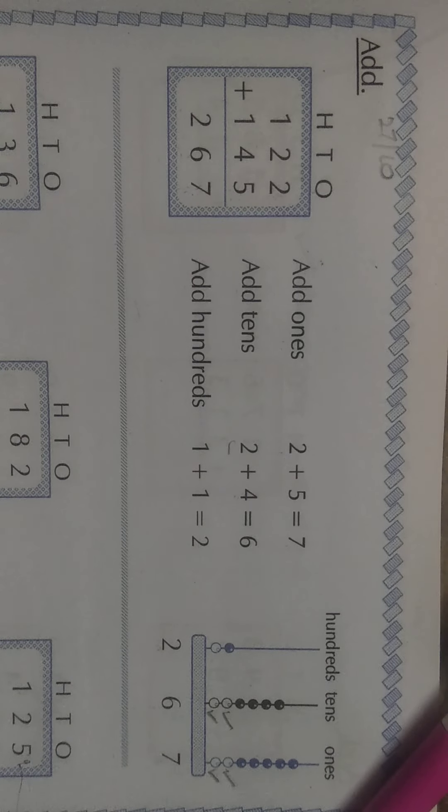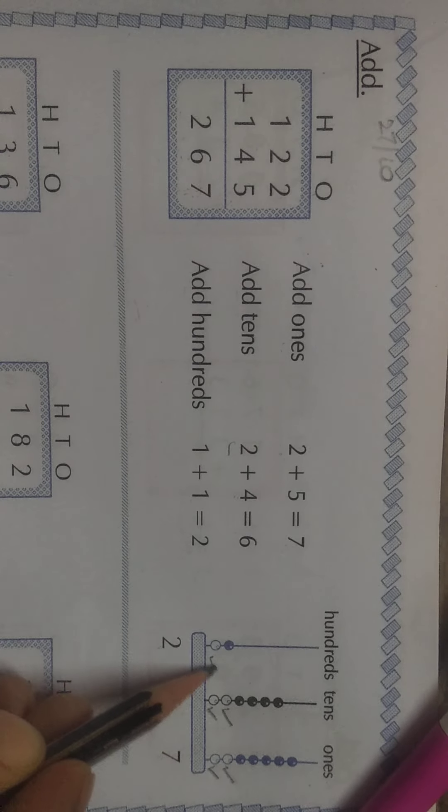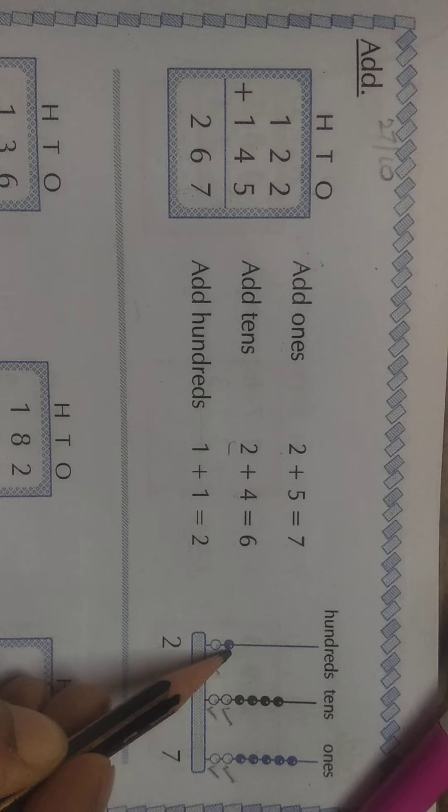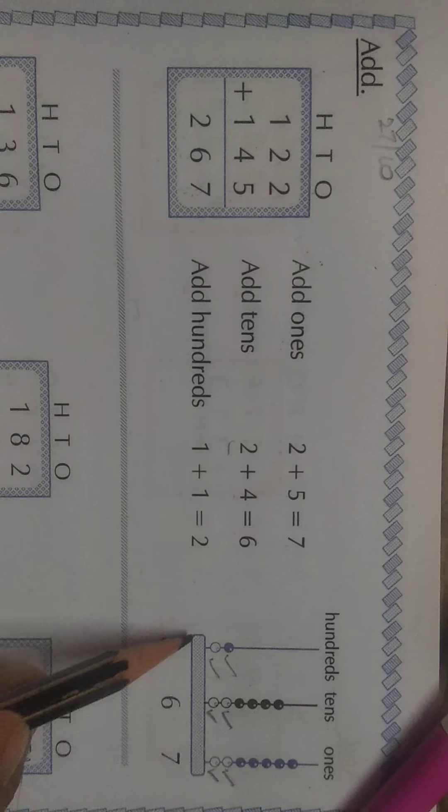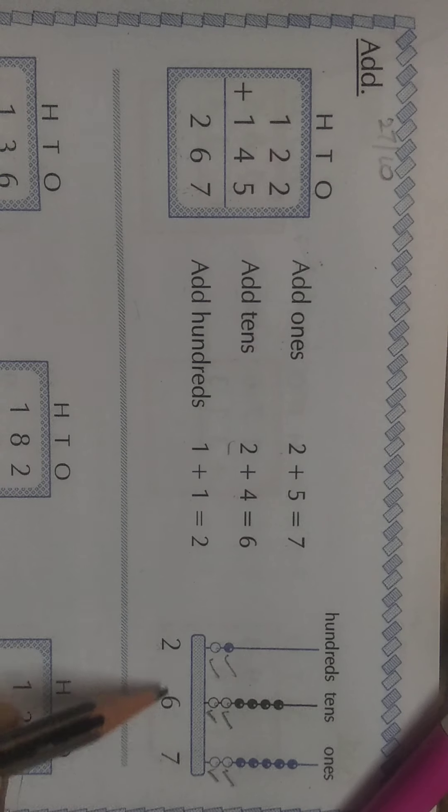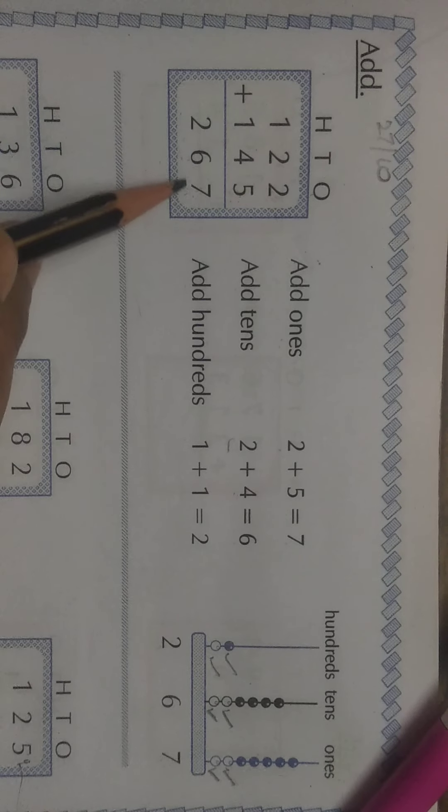So, 1 plus 1 is equal to 2. Look at this. For first one, one white bead is drawn and for second one, one blue bead. So, how many beads are there? 2 beads. So, children, the total answer is 267. What is the answer? 267.